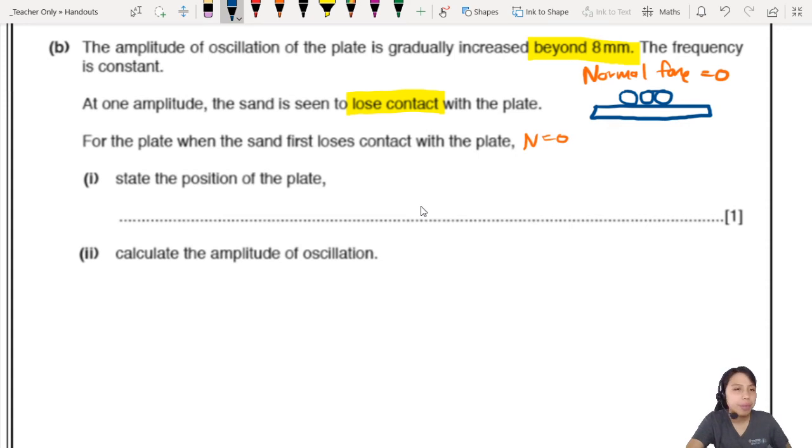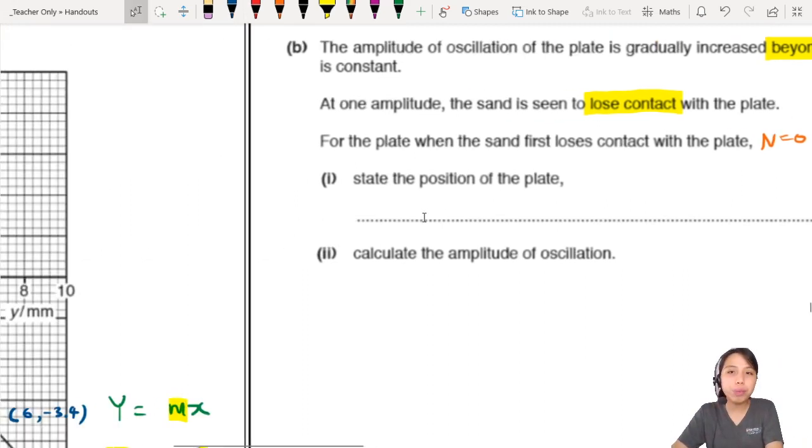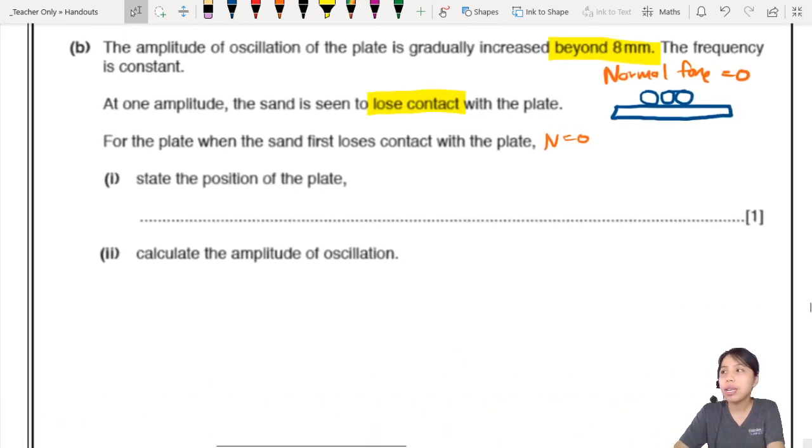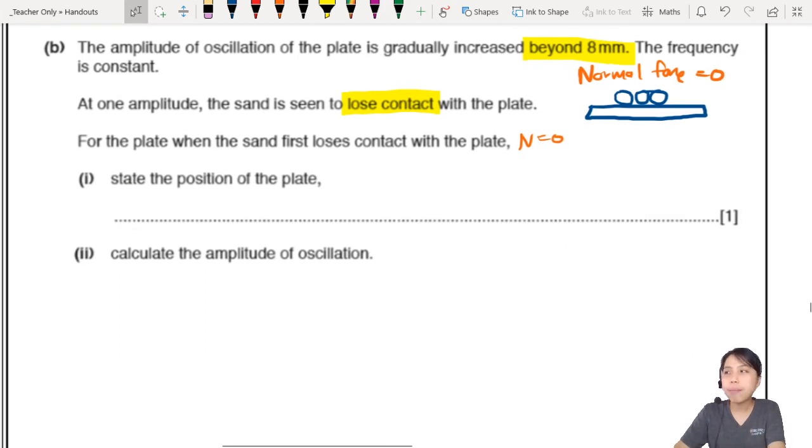Next, the amplitude of oscillation of the plate gradually increases beyond 8 mm. The frequency is constant. At one amplitude, the sand loses contact with the plate. Lose contact here means what? If you have this sand, they look like they're touching but they're not touching. How do we know? We can say this, that the normal force is zero. Once normal force is zero means it's not touching anything.